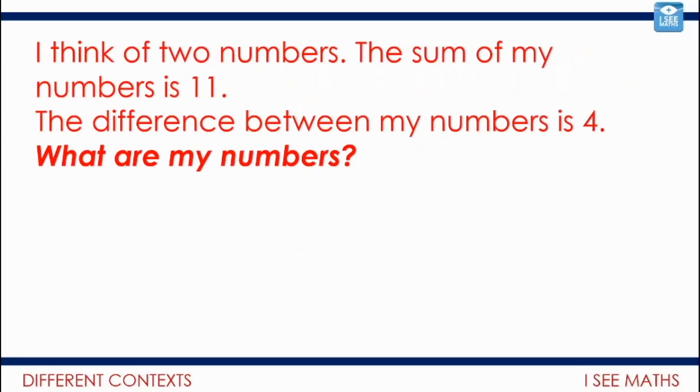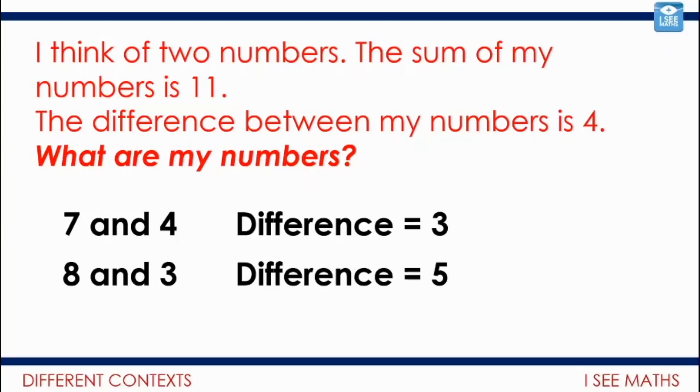I love this question. Think of two numbers. The sum of my numbers is 11. The difference between my numbers is 4. What are my numbers? Hmm. Numbers with a sum of 11. Seven and four. That's a difference of 3. How about I'll try this. I need to make that difference bigger. Eight and three. The difference there, that's 5. Hmm. Is this question impossible? I wonder. Have a think. The answers are in the answer section of the task questions. Is this impossible to answer or not? Why not? Hmm. Love to get your thoughts.